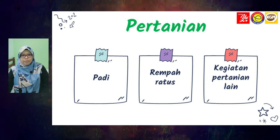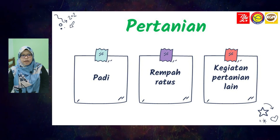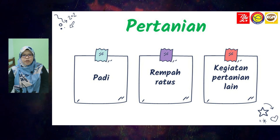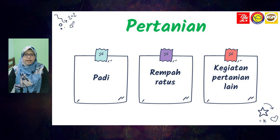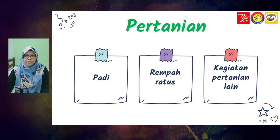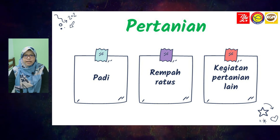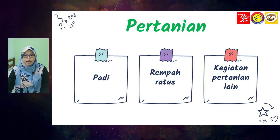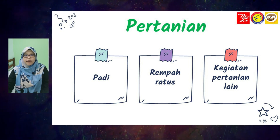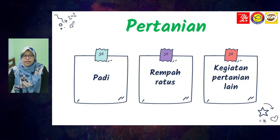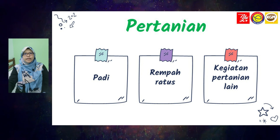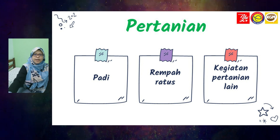Yang pertama kita akan tengok aktiviti pertanian. Pertanian ada tiga di sini: yang pertama adalah penanaman padi, yang kedua rempah ratus, dan yang ketiga kegiatan pertanian lain. Jadi kita akan tengok yang pertama iaitu penanaman padi.